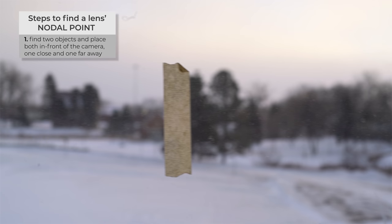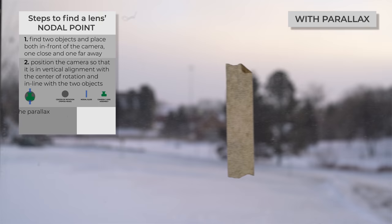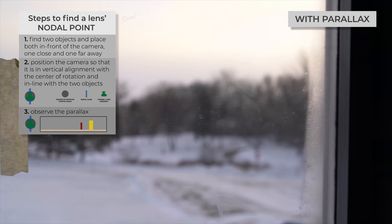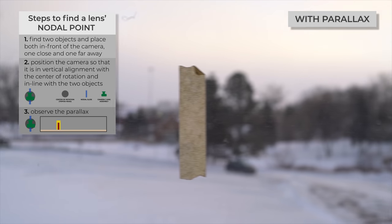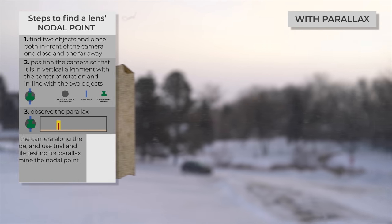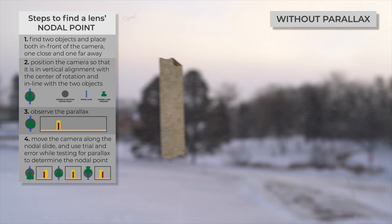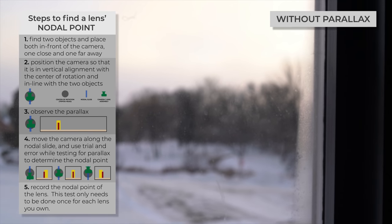To find the nodal point, you will need two objects — one positioned close to the camera and one far away — that are in a straight line with the camera. I used a piece of masking tape on a window. First, position the lens of your camera in vertical alignment with the center of your rotation head. Then rotate the camera to observe the parallax of the two objects. As you can see, when the camera rotates, the two lines become separated. This effect is undesirable in panoramas and will make stitching hard. Once you observe the parallax, adjust your camera along the nodal slide until the parallax effect disappears. Record this position for future use — this operation only needs to be done once for every lens.